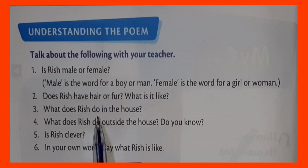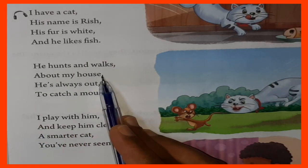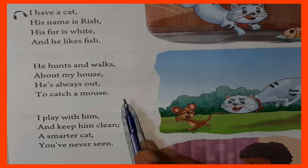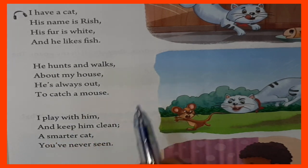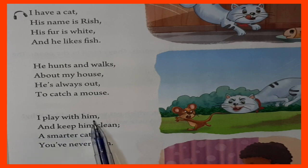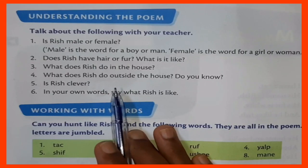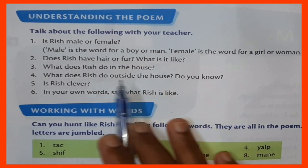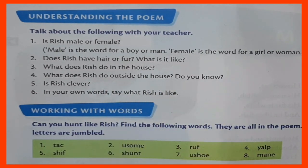What does Rish do in the house? He hunts and walks about my house. So we have to write: he hunts and walks. Also, I play with him, so he also plays in the house. So we write: Rish hunts and walks about the house.